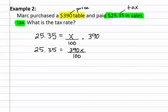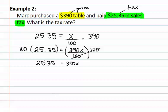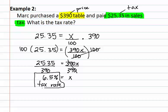We now have a fraction. Remember, to clear fractions in problems, you multiply by the LCD on both sides. This will eliminate the fraction and you will now have 390x equals 2535. You can now continue to solve by dividing both sides by 390. This results in x equals 6.5. Remember that this is a percent, so it is 6.5 percent — and that is his tax rate.